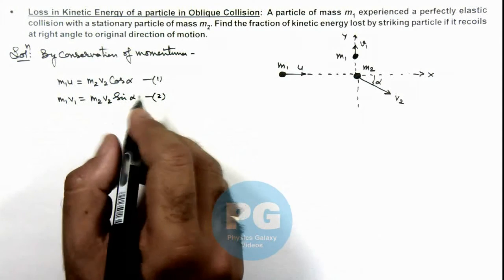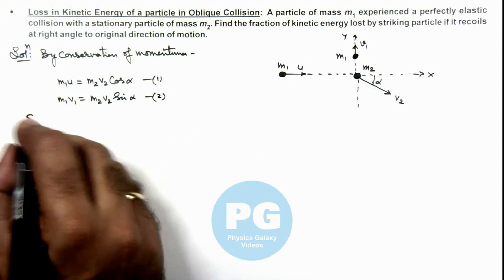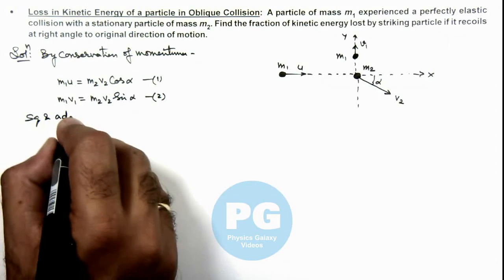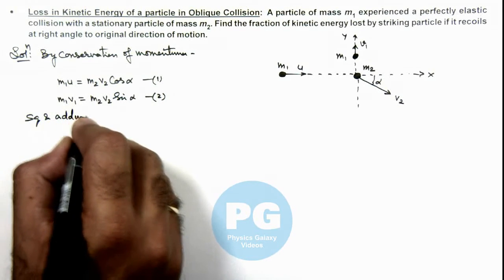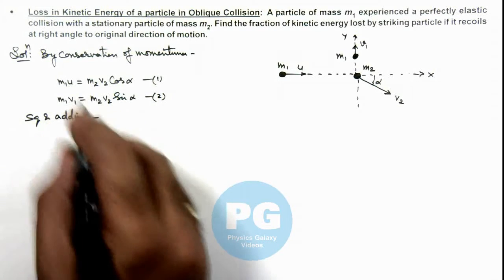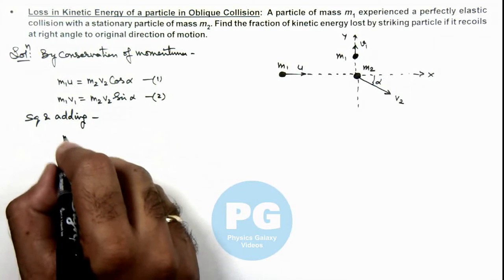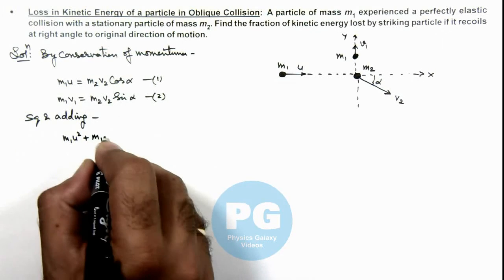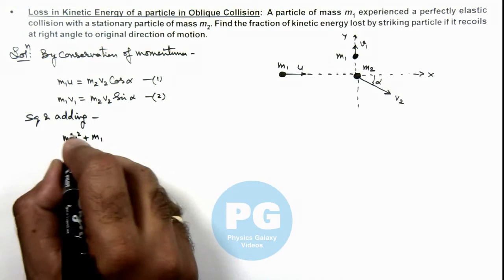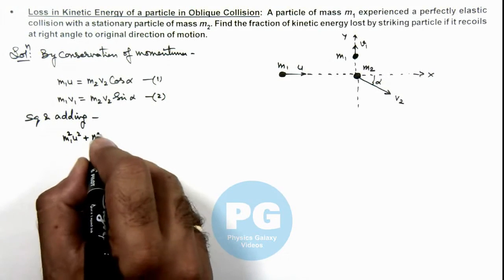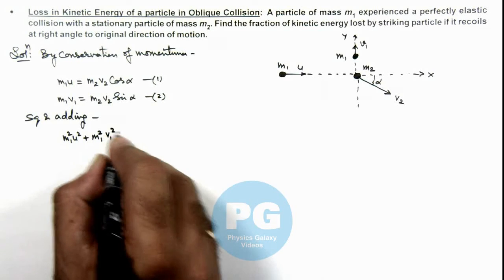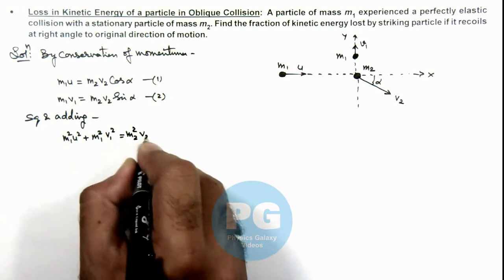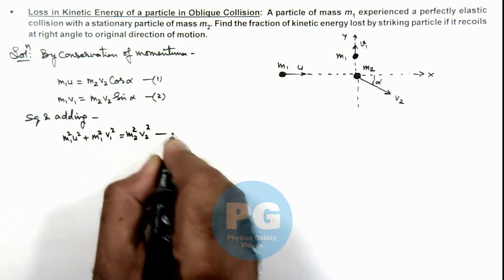If we square and add these equations, the overall result is: m1²u² + m1²v1² = m2²v2². Say this is Equation 3.